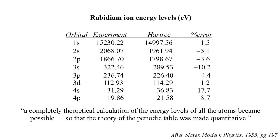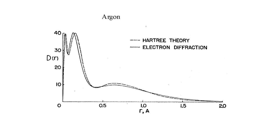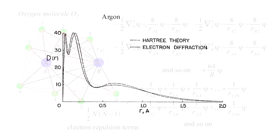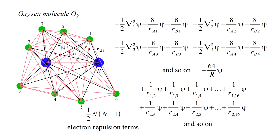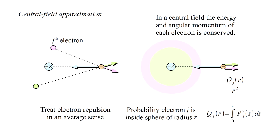We've seen that Hartree's method provides a good approximation to the energies and configuration of electrons in atoms. However, when we try to extend these ideas to molecules, we run into some challenges. The central field approximation is key to the success of Hartree's method — treating the net force on each electron due to the nucleus and the other electrons as always directed towards the center of the atom greatly simplifies the problem.